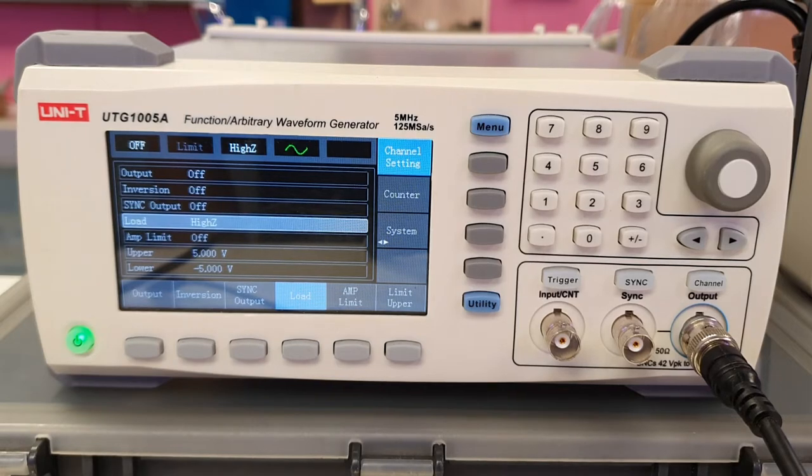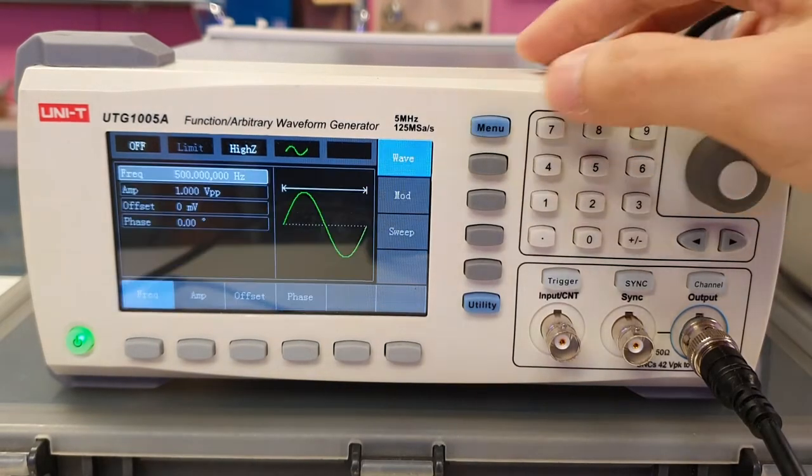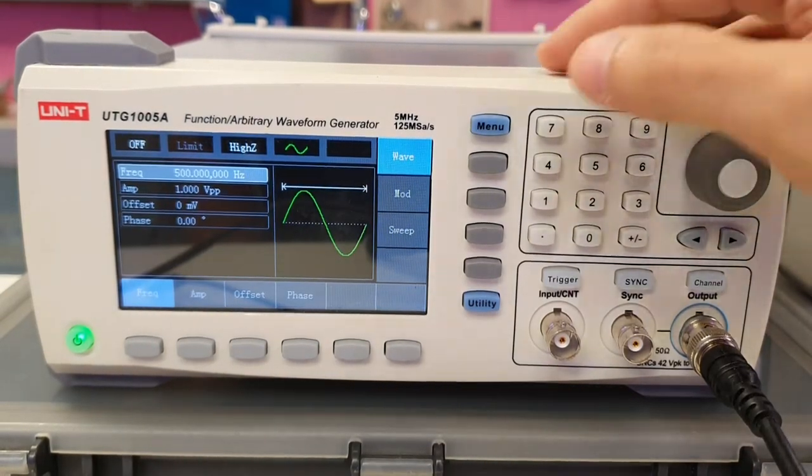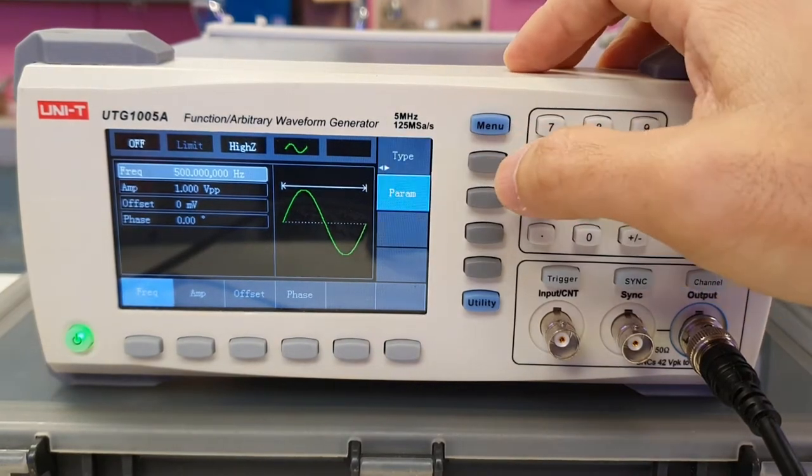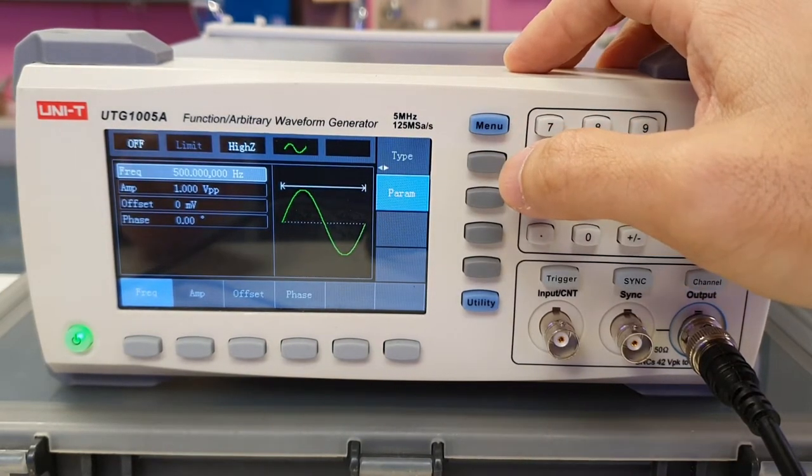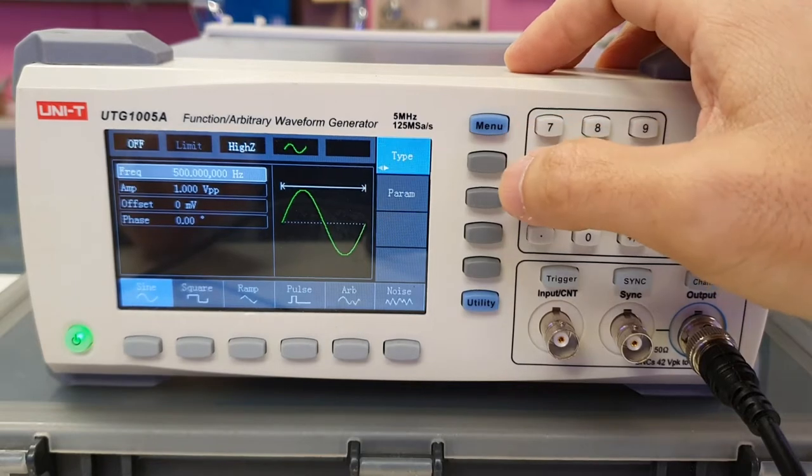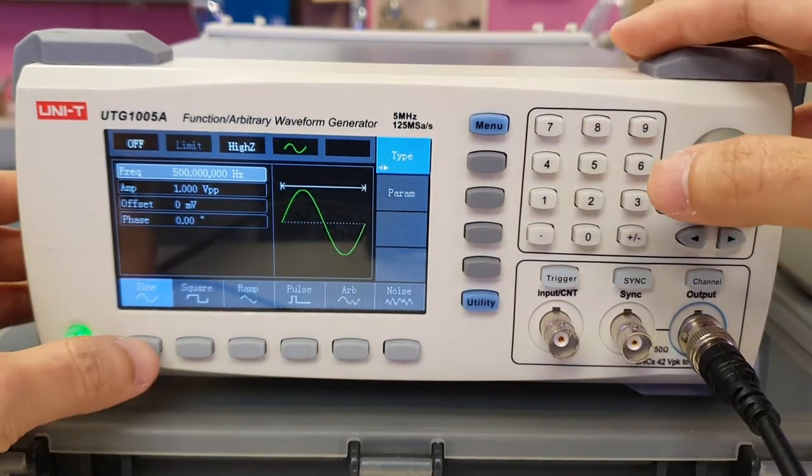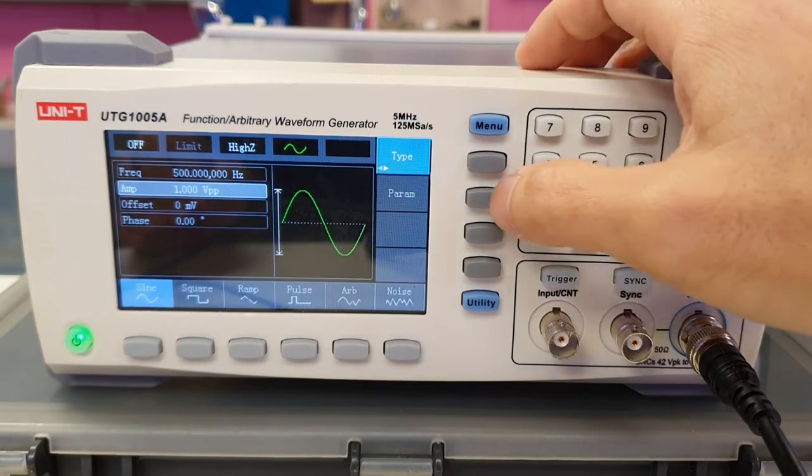To generate a sine wave, press Menu, then press Wave, followed by Type. Then select Sine, and finally Parameter.